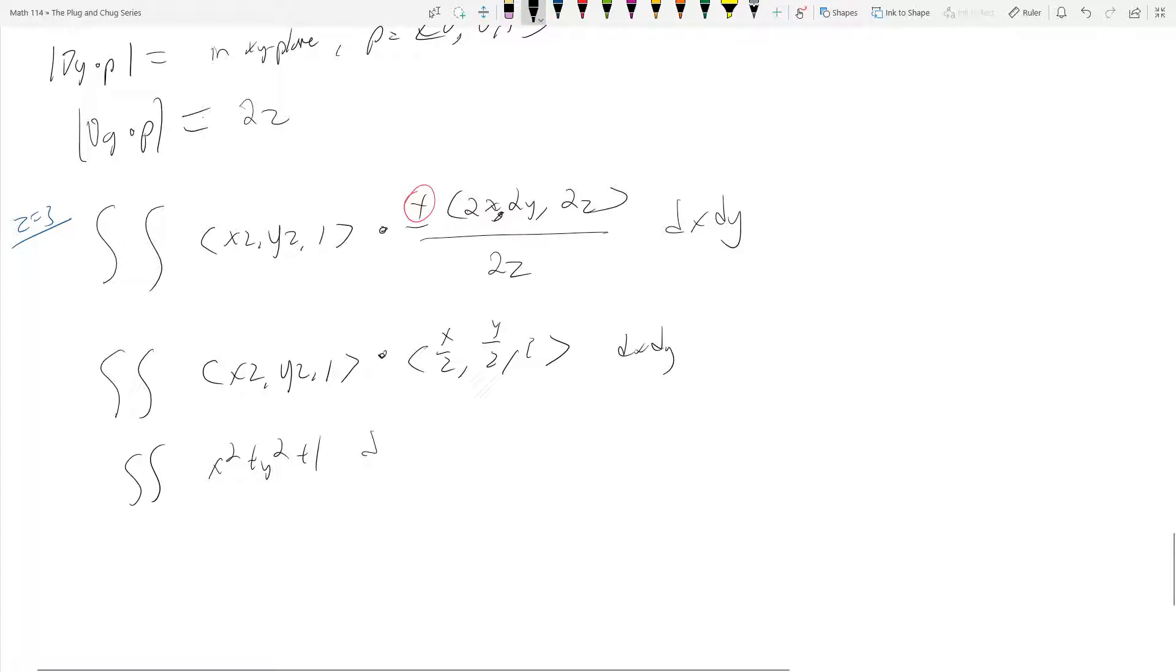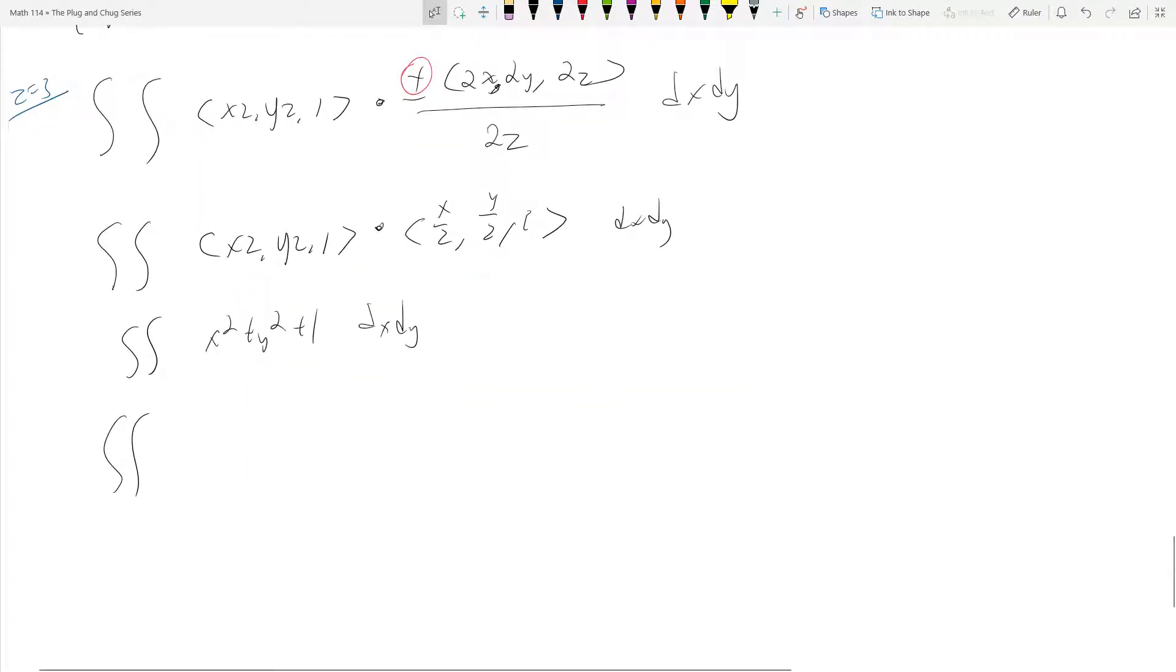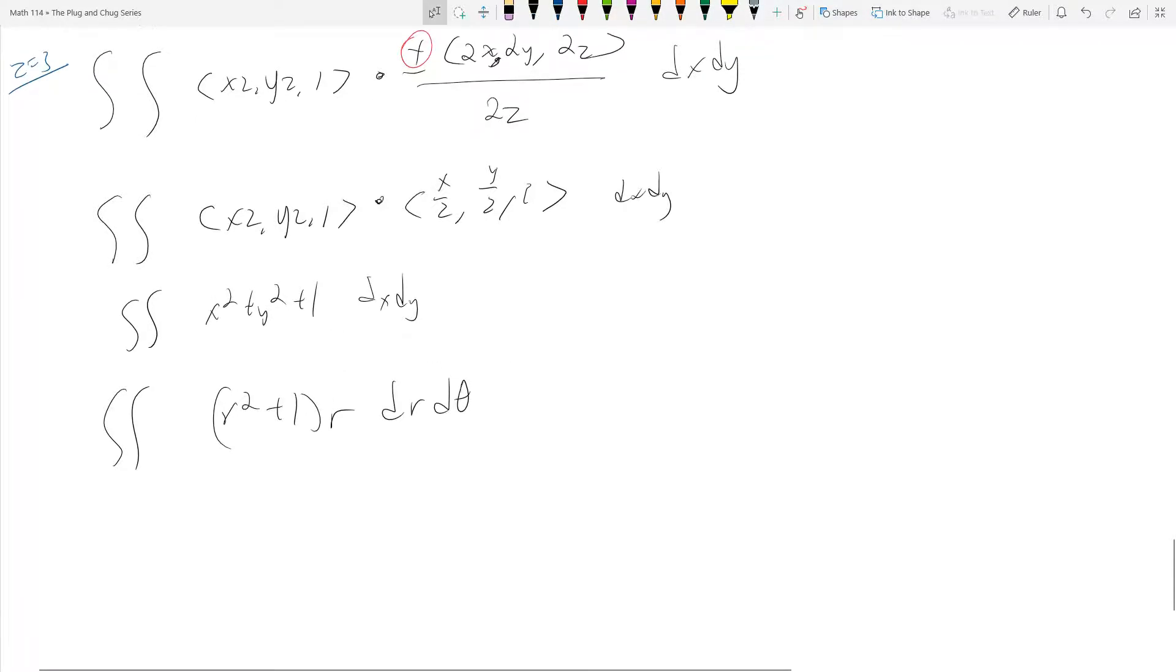And now we have dx dy, but obviously we're not going to stick with dx dy, because I have x squared plus y squared. So now I'm going to do the double integral of, well, replacing polar, this becomes r squared plus 1 times r dr dθ, because remember, dx dy becomes r dr dθ, and then I need my bounds.